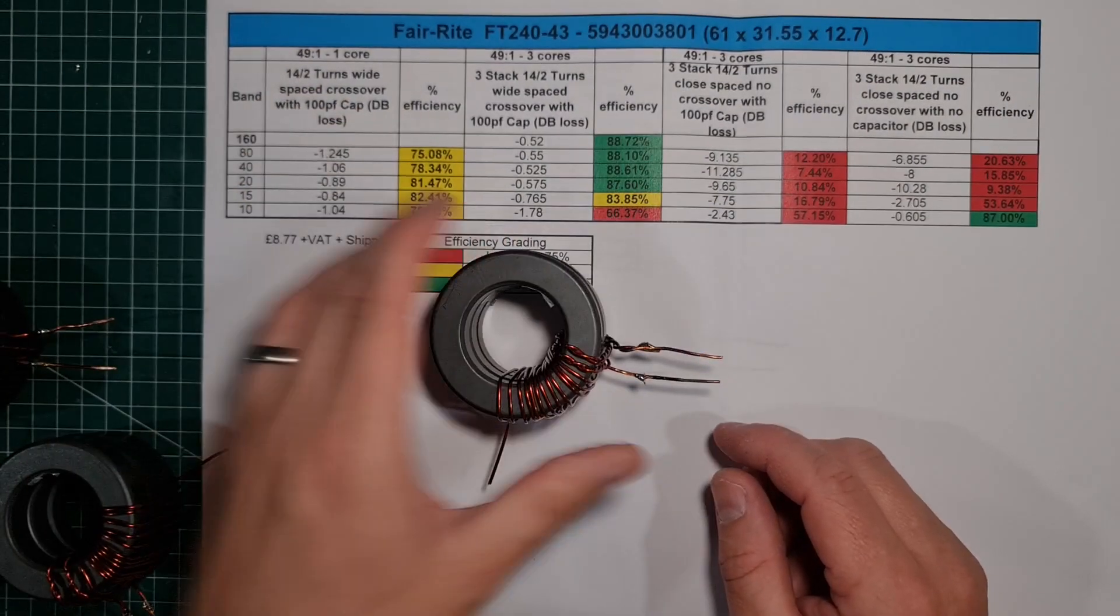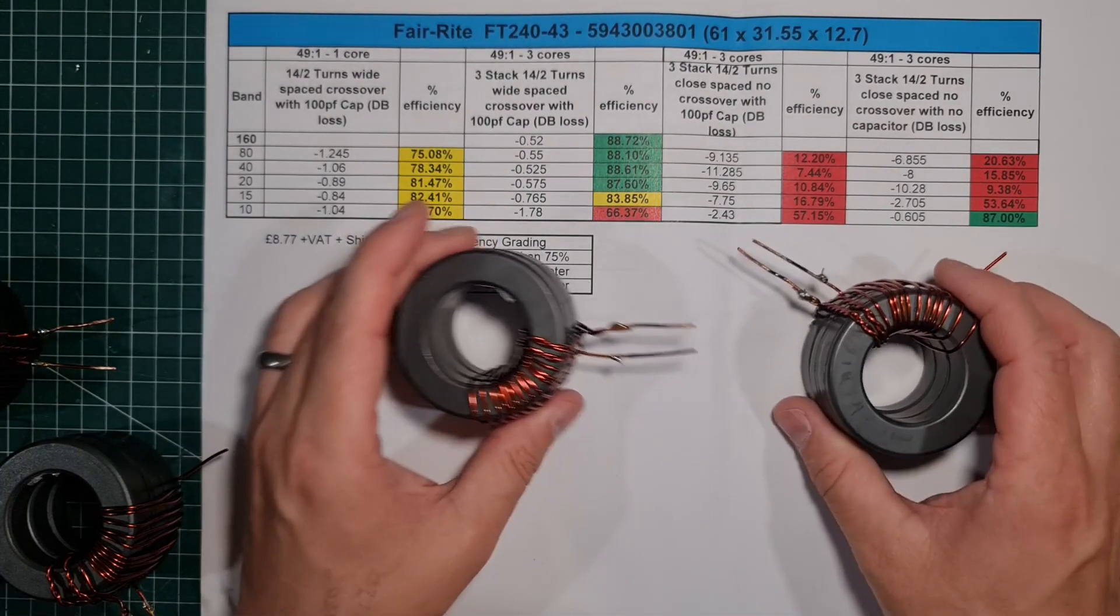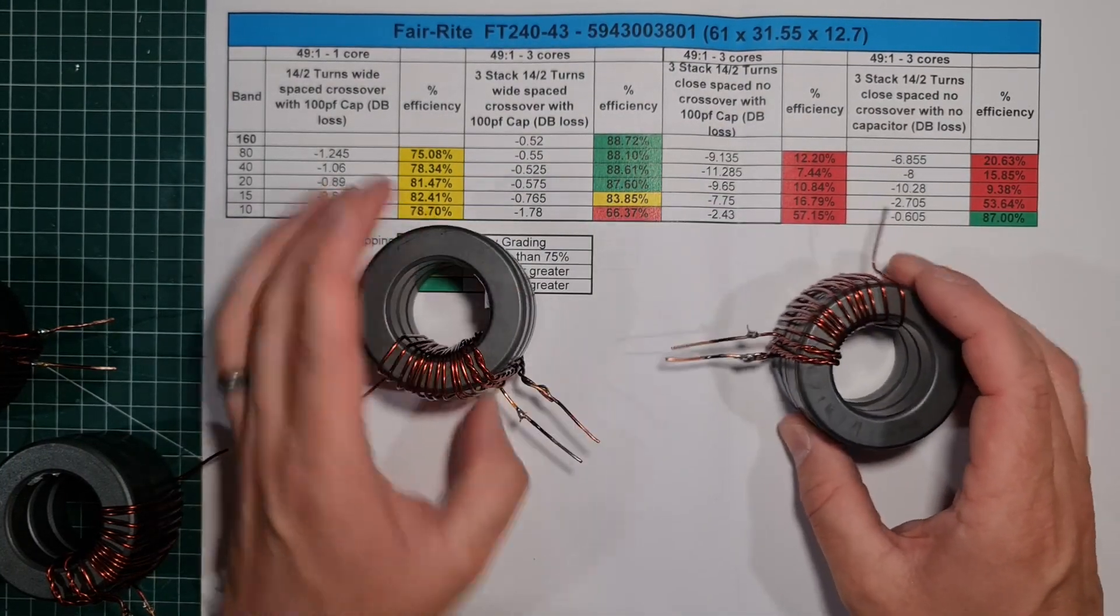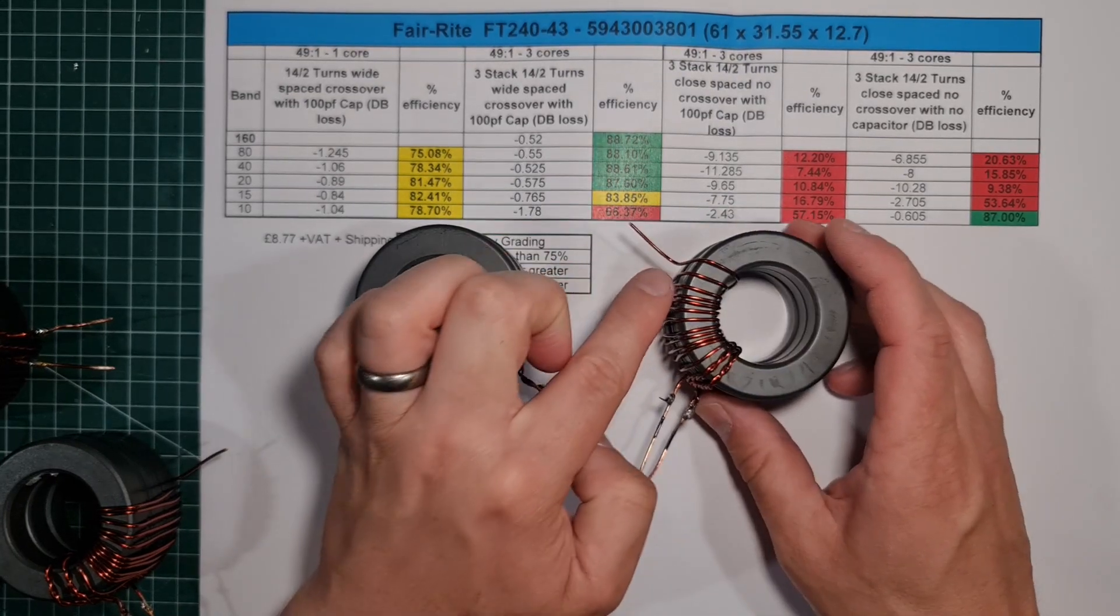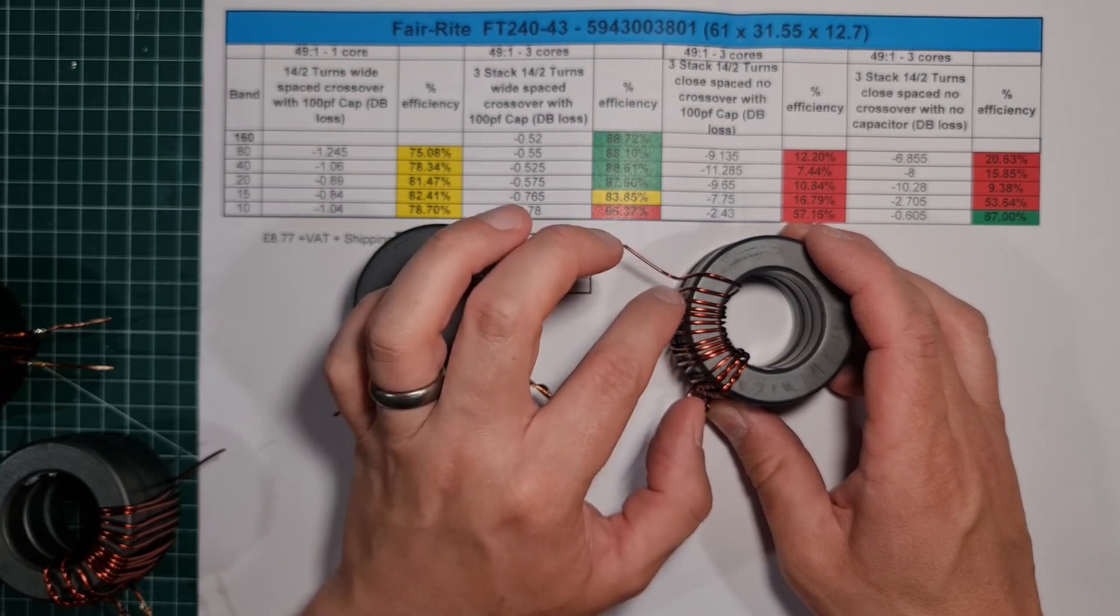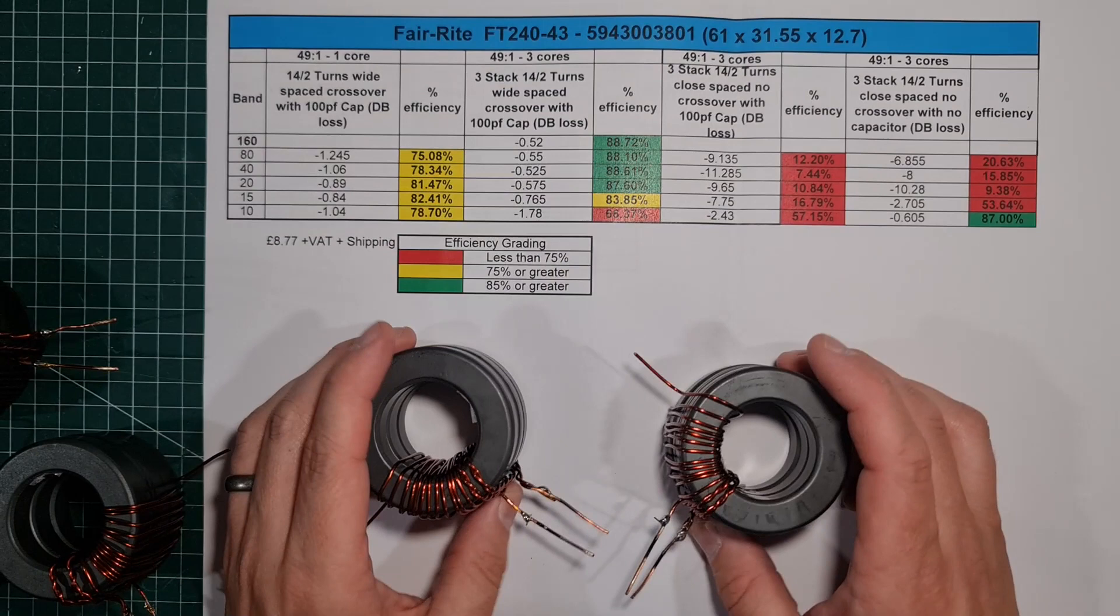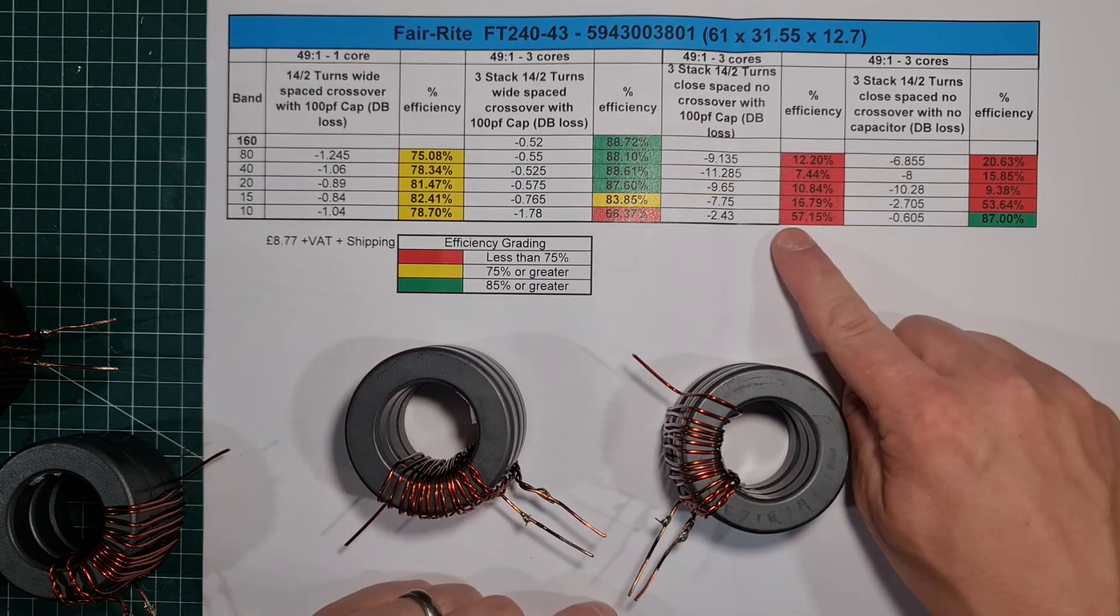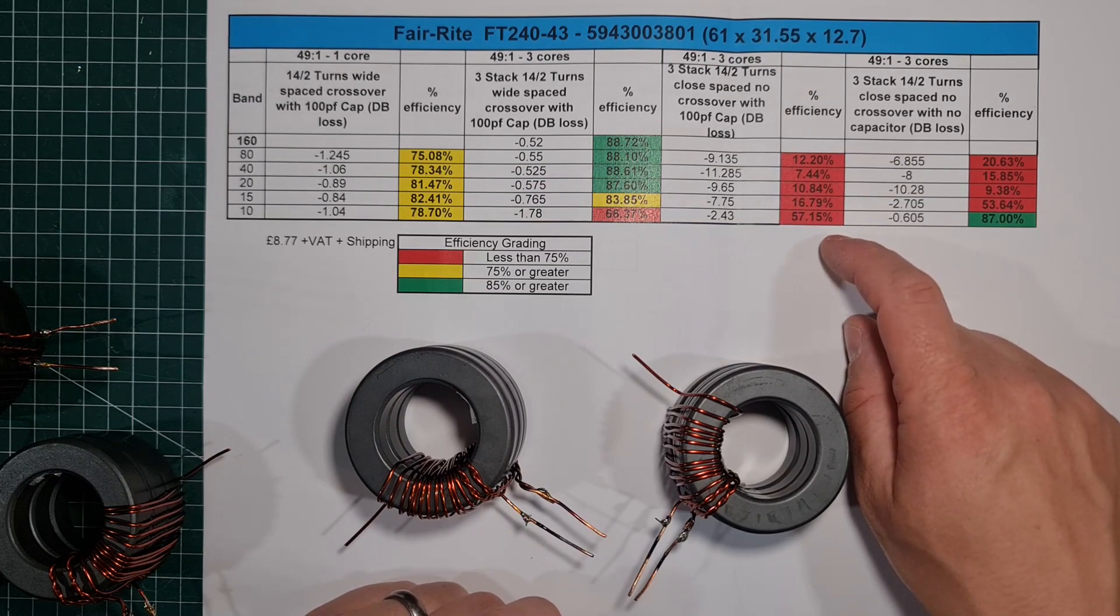I then actually did, this was the last measurement that I did. This is the 43, although they look identical. These are basically two turns primary, 14 turns secondary, but these are actually close windings because I had some different results on the smaller cores that I was using.